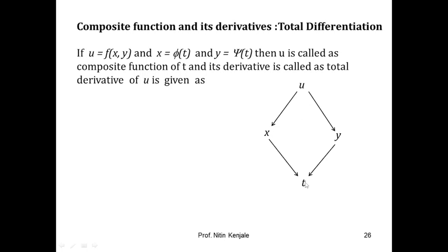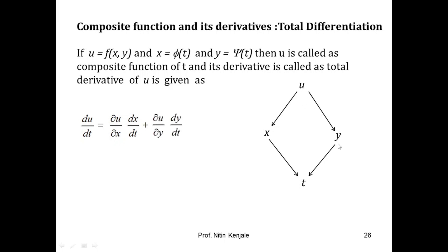The derivative of u with respect to t will be an ordinary derivative, whereas the derivative of u with respect to x or y will be a partial derivative. Since x and y are functions of single variable t, their derivative with respect to t will be ordinary. The derivative of u with respect to t is called the total derivative of u, given as du/dt = (∂u/∂x)(dx/dt) + (∂u/∂y)(dy/dt).